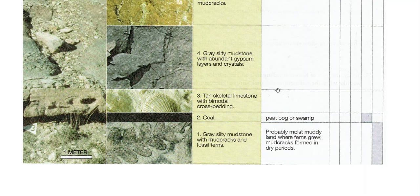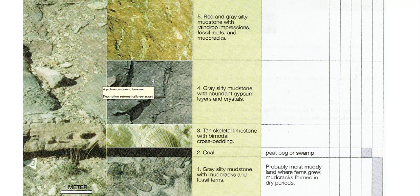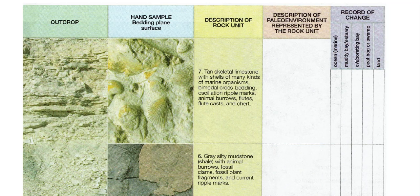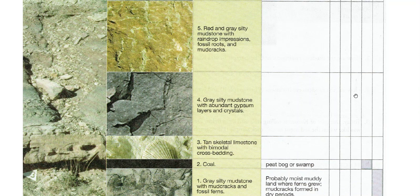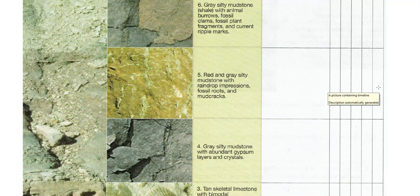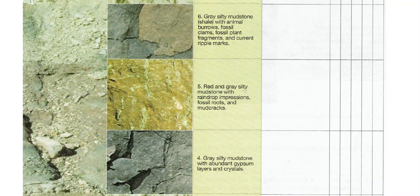You might want to note 'neritic waters' or shallow waters here. Moving up, we have gray silty mudstone with abundant evaporites — gypsum layers and crystals — so this is more of an evaporating bay. Gray again indicates reducing waters, and gypsum means evaporation, so check mark the evaporating bay. The next layer has red and gray silty mudstone with raindrop impressions, fossil roots, and mud cracks — obviously we're on land, so describe this as some sort of coastal land environment.